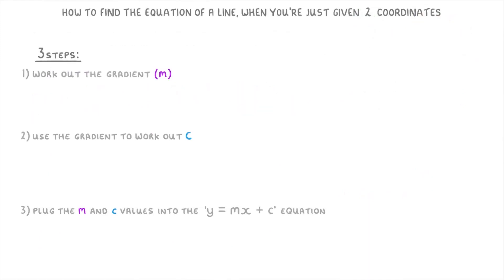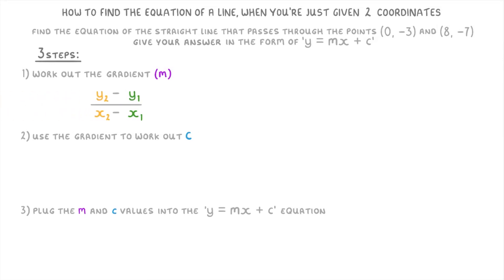Let's try one more. So this time we're trying to find the equation of the straight line that passes through the points (0, -3) and (8, -7), and again we need to give our answer in the form of y = mx + c.